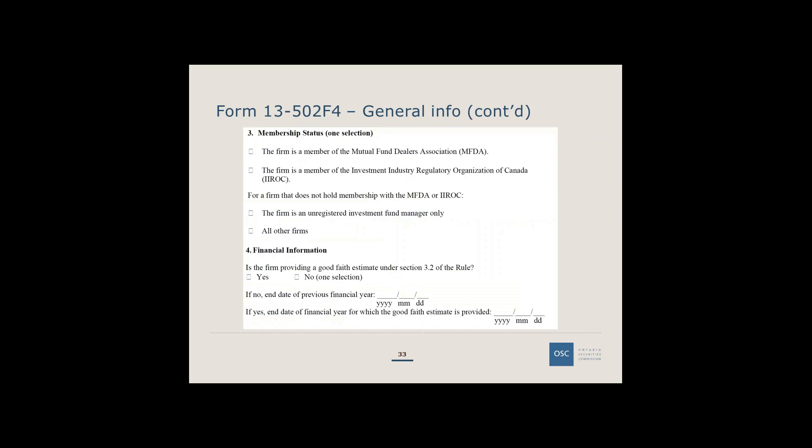All firms must select a membership status. If your firm is an MFDA member — regardless of any other registration category — select MFDA, which brings up a separate form. Similarly, if your firm is an IIROC member, select that option for the separate IIROC participation fee calculation. If you are neither an MFDA nor IIROC member, select either 'unregistered investment fund manager' if applicable, or 'all other firms' for registered firms, international dealer or advisor exemption firms, or any other registration category.